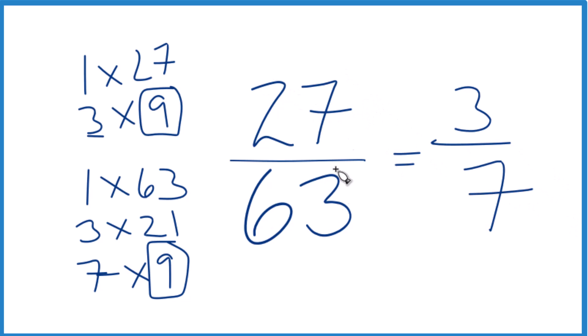We've simplified the fraction 27/63. We end up with 3/7, and we can't simplify this any further. These fractions are the same; they have the same value. 27 divided by 63 will give you the same number as 3 divided by 7.